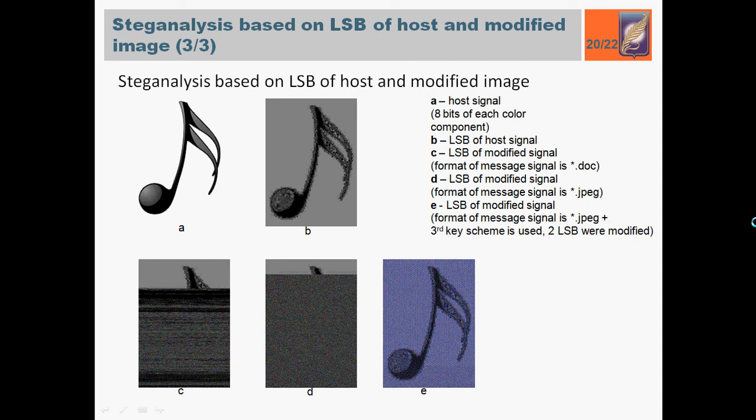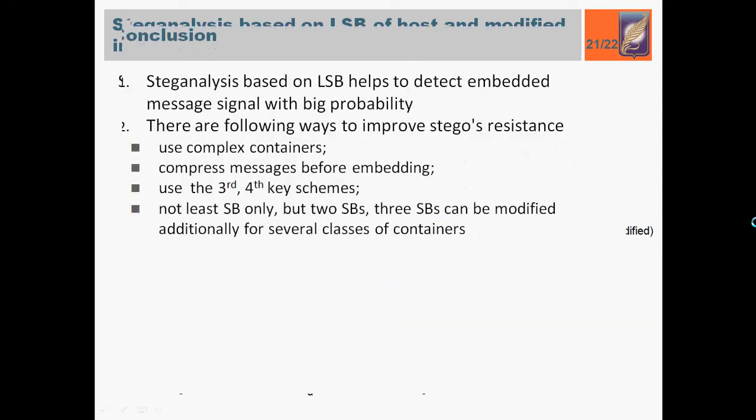So, here is our conclusion. Steganalysis based on LSB also detect embedded message signal with big probability. There are following ways to improve stego resistance: Use complex containers. Compress messages before embedding. Use the third, fourth key schemes. Not least significant bits only. Two, three significant bits can be modified additionally for several classes of containers. Thank you.